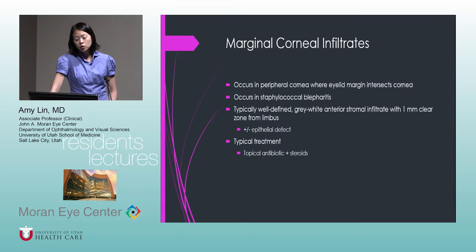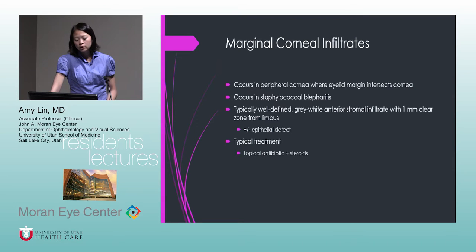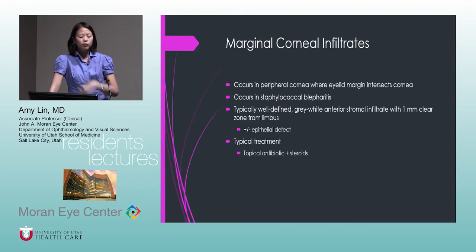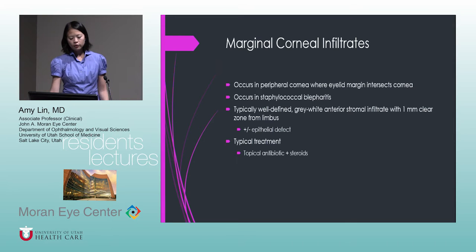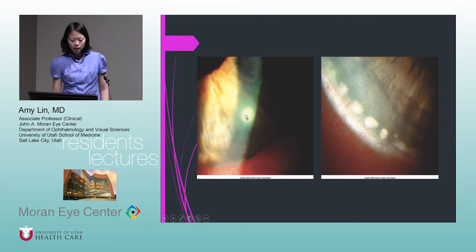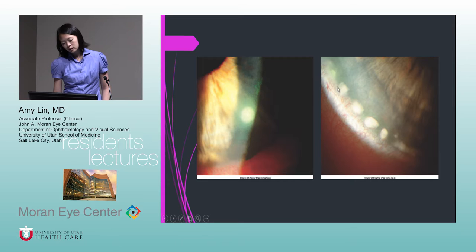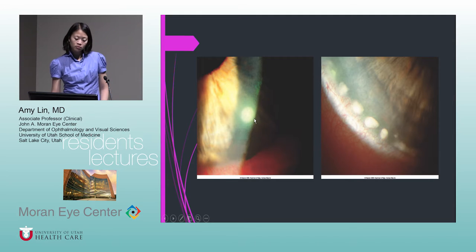Marginal corneal infiltrates occur in the peripheral cornea where the eyelid margin intersects the cornea — at the 10 and 2 o'clock and 8 and 4 o'clock positions. They are typically very well-defined gray-white anterior stromal infiltrates with a clear zone from the limbus, and there may or may not be an epithelial defect. Treatment is a combination of topical antibiotics and steroids. Classic appearance is shown — this is pretty classic for a staph marginal infiltrate. Multiple infiltrates can occur with variable distances of clear zone.